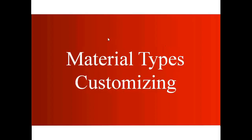Our next topic is material type customizing. As we have seen in previous topics, whenever we create a material we need to select a type. The type can be raw material, finished goods, trading goods, or semi-finished goods. In this topic we're going to see what the customizing behind those material types is and what their effects are. The topics we'll cover are: customizing new material types, material number range assignment, and field selection control.